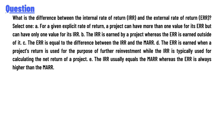The difference between the internal rate of return (IRR) and the external rate of return (ERR). Select one: Option A — for a given explicit rate of return, a project can have more than one value for its ERR but can have only one value for its IRR. Option B — the IRR is earned by a project whereas the ERR is earned outside of it.